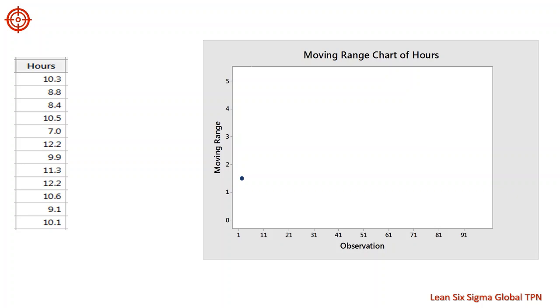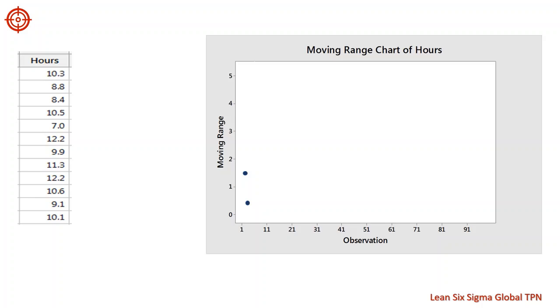We do the same thing for the next observation. The second moving range consists of the absolute difference between the second and third observations. Their difference is the second point on the MR chart. The third subgroup consists of the third and fourth observations. Their difference is the third point on the chart.